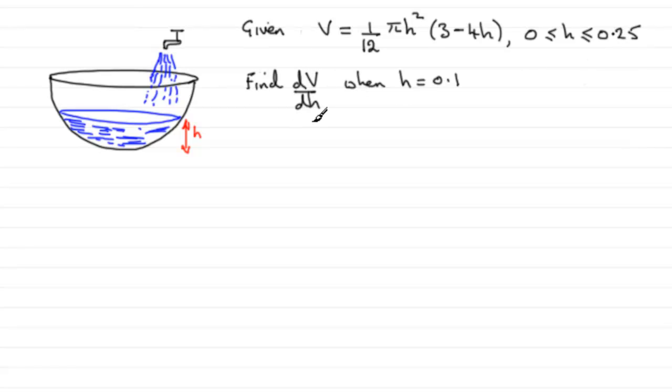And our problem is that we've got to find dV/dh when h is 0.1. So how do I do something like this?